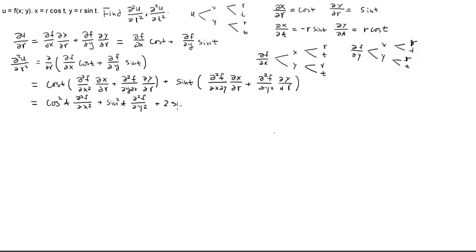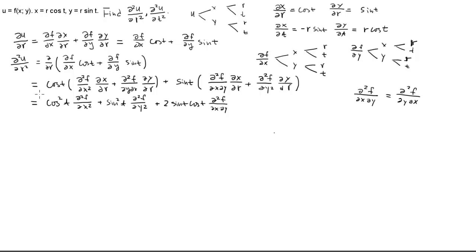Combining the mixed derivatives gives 2·sin(t)·cos(t)·f_xy. So the final result for ∂²u/∂r² is cos²(t)·f_xx + 2·sin(t)·cos(t)·f_xy + sin²(t)·f_yy. This holds as long as f is a good function — meaning twice differentiable with continuous derivatives, so the mixed partials are equal. Now let's look at the second-order derivative with respect to t.